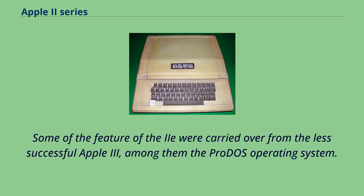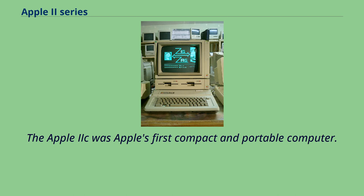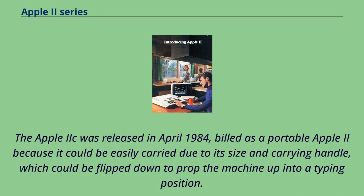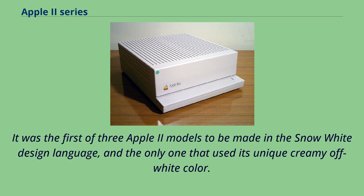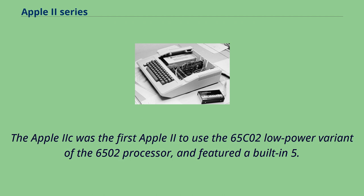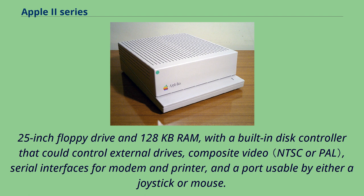The Apple IIc was Apple's first compact and portable computer, released in April 1984. Billed as a portable Apple II, it could be easily carried due to its size and carrying handle, which could be flipped down to prop the machine into a typing position. Unlike modern portables it lacked a built-in display and battery. It was the first Apple II to use the 65C02 low-power variant of the 6502 processor, and featured a built-in 5.25-inch floppy drive, 128KB RAM, a built-in disk controller, composite video, serial interfaces for modem and printer, and a port usable by either a joystick or mouse.